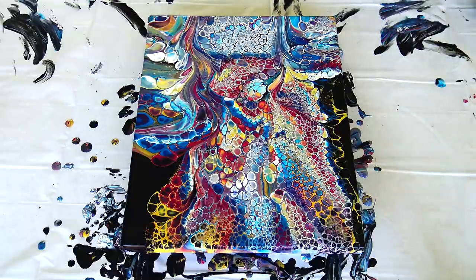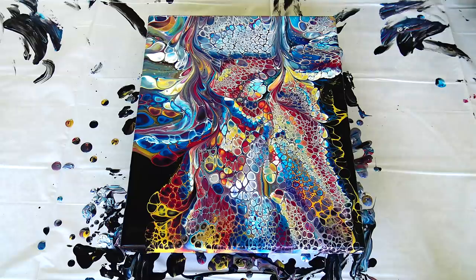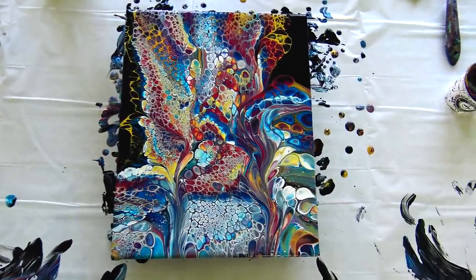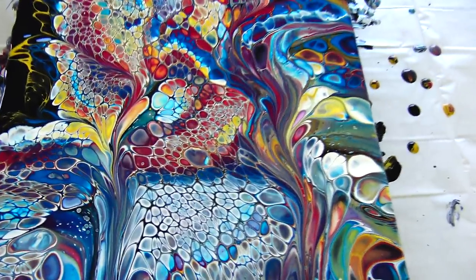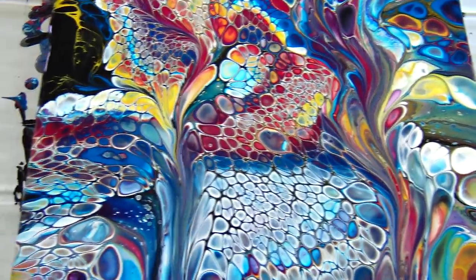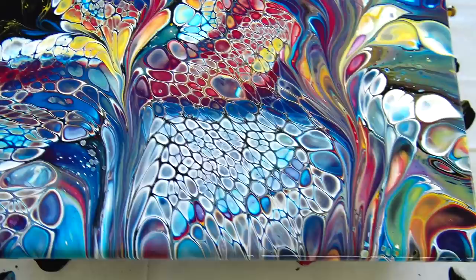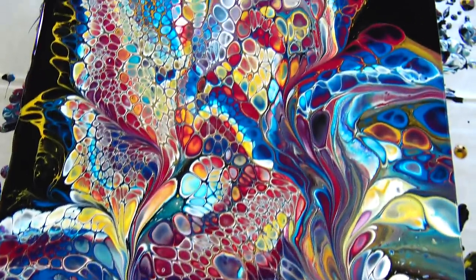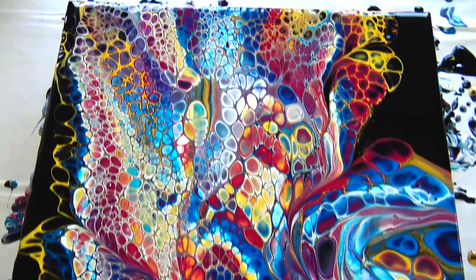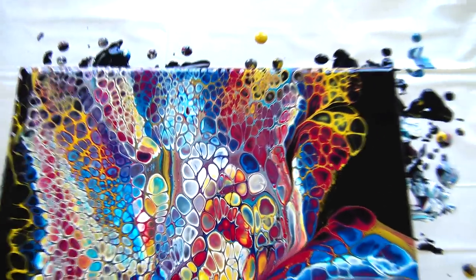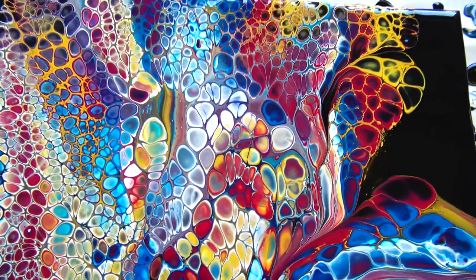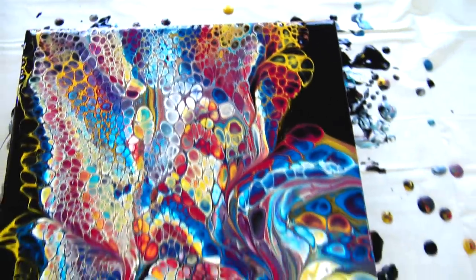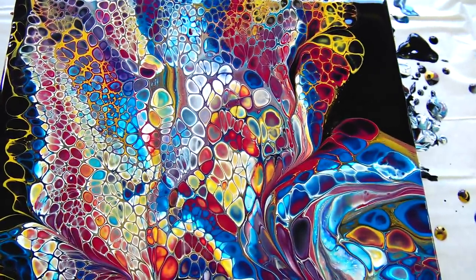So I did get some negative space. Here it is. Definitely would love to have more negative space. But anyway, maybe I will just give a baby torch here because this part kind of doesn't belong there. You see?